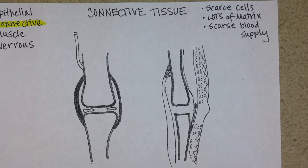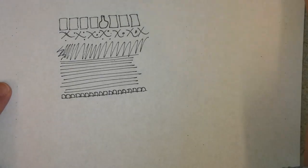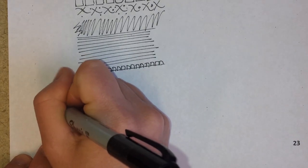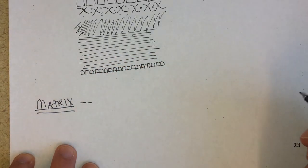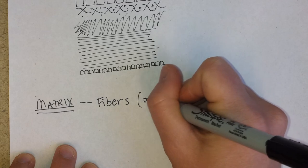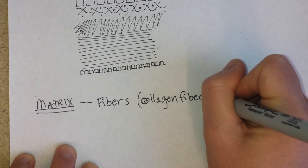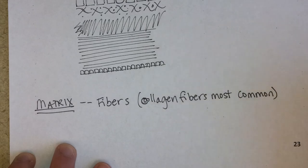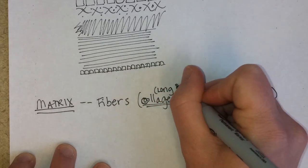So let's go down to the bottom of the page and talk about matrix. Matrix usually has some kind of fibers. Most of the time those fibers are collagen fibers — that's a C for collagen. Collagen fibers are just a type of long, fibrous protein.